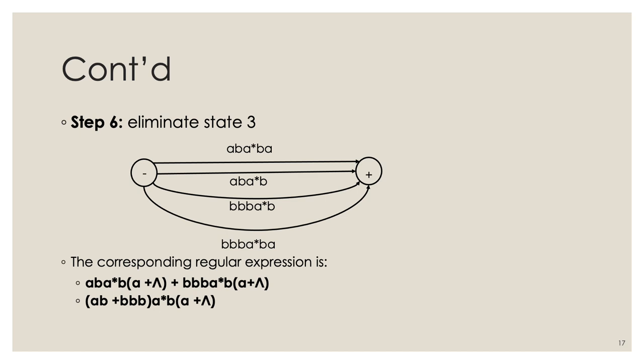Taking the union of the four regular expressions is acceptable, but to make it more readable, we can factorize. The factor a·b·a*·b appears with either 'a or empty string' appended, and b·b·b·a*·b similarly. Notice that 'a or empty string' is itself a factor, so we can factor out (a·b or b·b·b)·a*·b·(a or empty string). This completes the transformation from transition graph to regular expression.